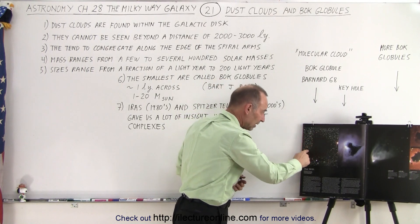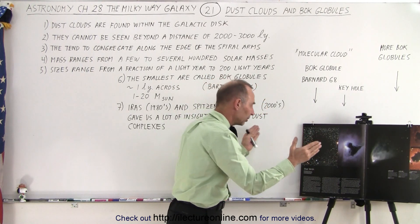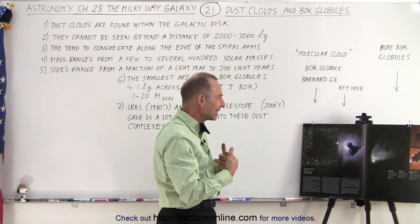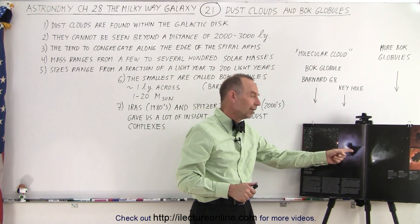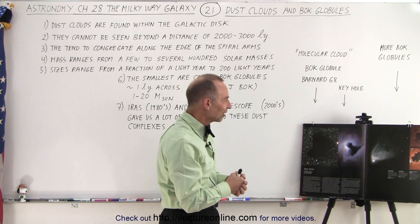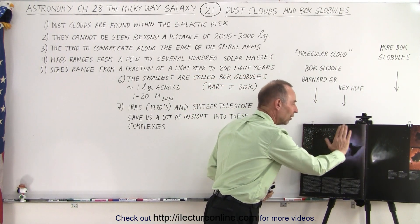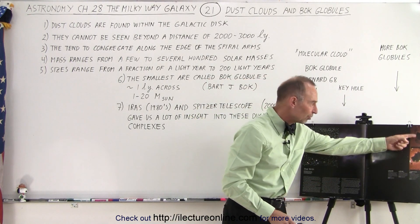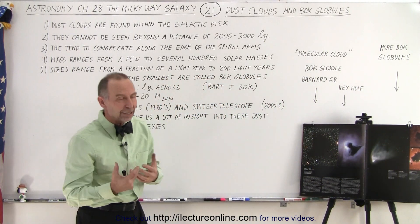You can see the reddening of the starlight on the edges of the Bok globule, and then in the middle there's no light coming through at all — we call that the extinction of the light. Here's another very famous little nebula called the Keyhole Nebula, because it looks just like an old-fashioned keyhole. Again, the only reason you can see it is because you have a bright reflection nebula behind it. There are many such Bok globules throughout the nearby region.